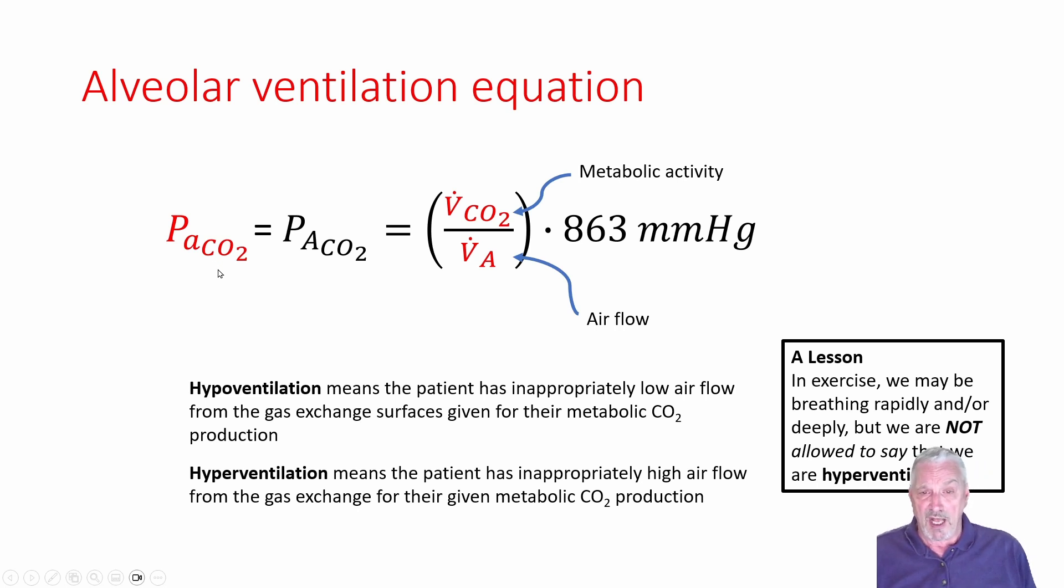which is exactly what the chemoreceptors are all about, maintaining CO2 homeostasis. And so although we're breathing rapidly and we're breathing deeply when we exercise, we're not hyperventilating. And that's the kind of thinking that the alveolar ventilation equation should promote in us. So that's the alveolar ventilation equation in a nutshell.